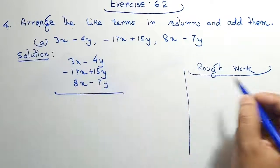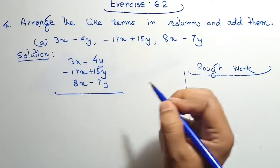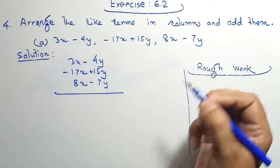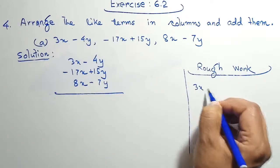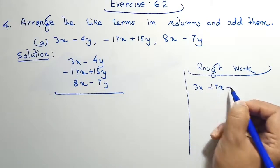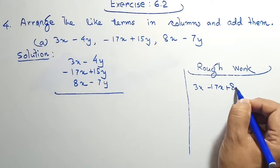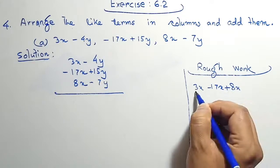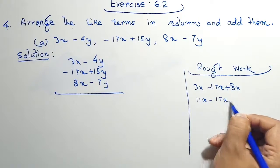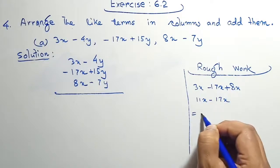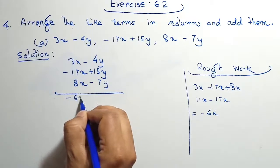Here we only find the total value of x and y. Therefore 3x minus 17x plus 8x. So 8x plus 3x is 11x minus 17x. Therefore minus 6x is our answer.